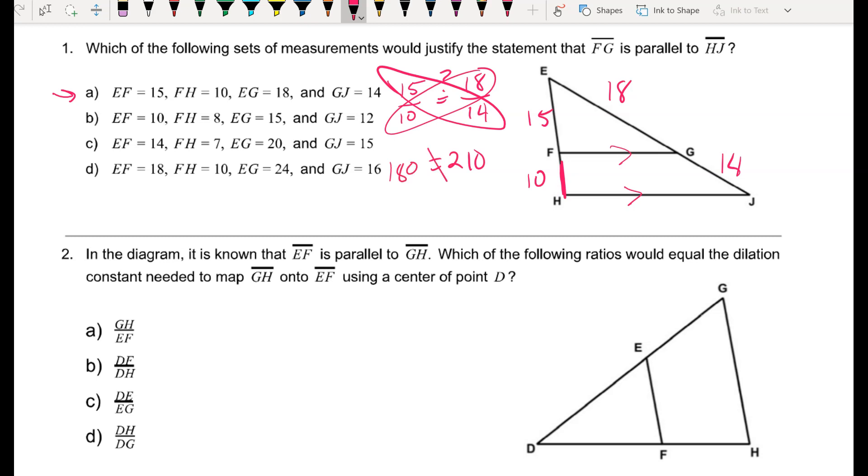So notice these aren't equal, so that proportion is not true. So it can't be answer choice A. If I try this setup again with answer choice B, let's see what happens. EF is 10, FH is 8, EG is 15, and JG is 12.